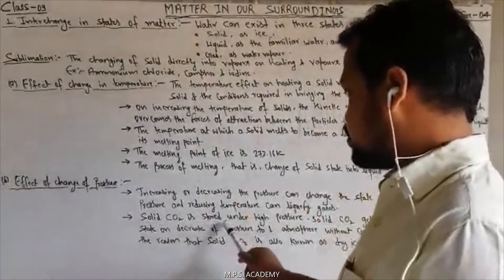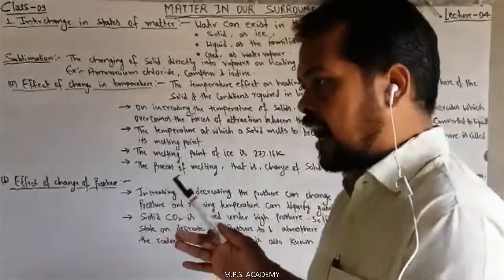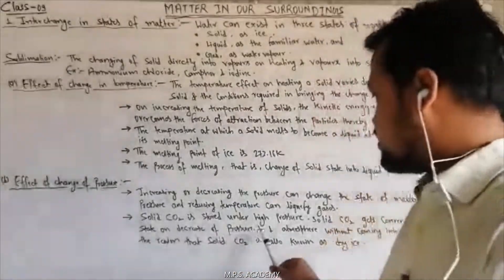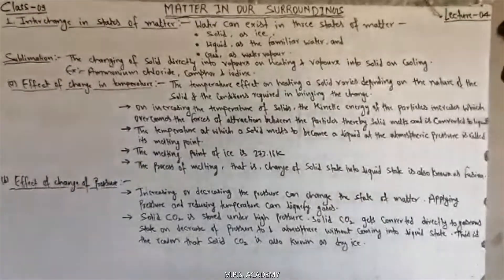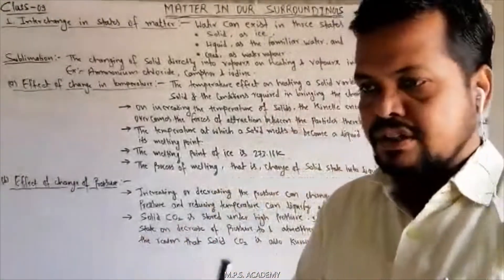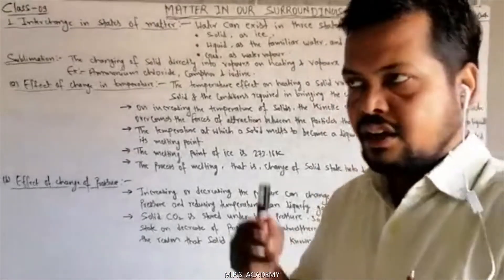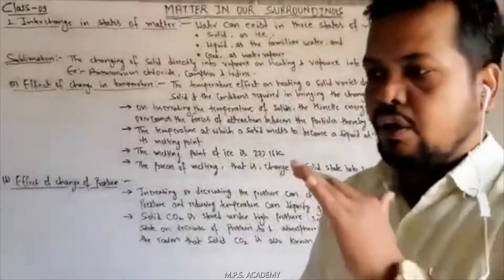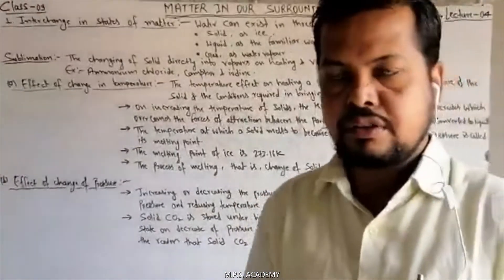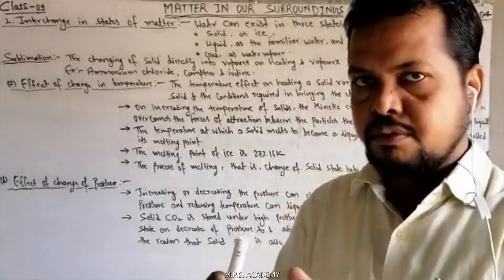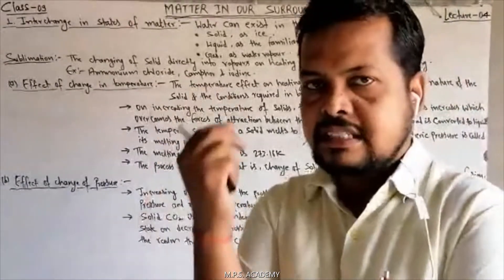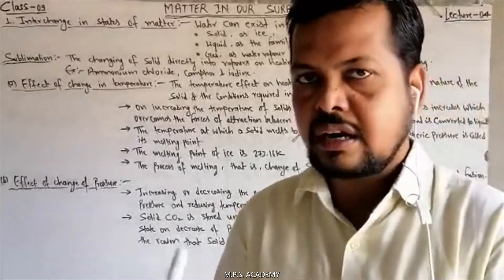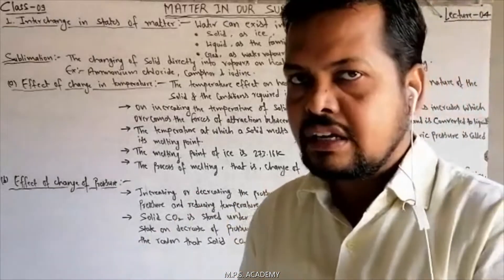Solid CO2, जिसे हम dry ice भी कहते हैं, उसको high pressure के अंदर store किया जाता है। Solid CO2 gets converted directly to gas on decreasing the pressure to one atmosphere, without coming into liquid. जैसे cylinder में CNG gas liquid के रूप में compressed होकर store होती है और जैसे ही pressure release करते हैं तो liquid gas में change हो जाती है।